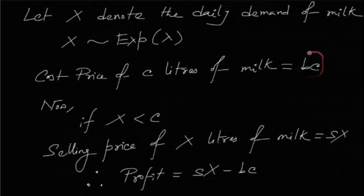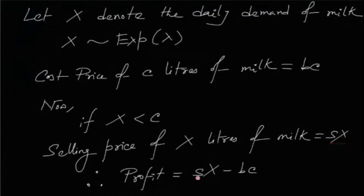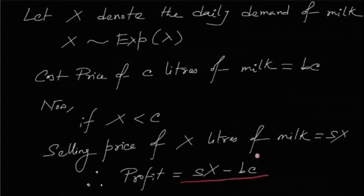Now, if X is less than C — that is, if the daily demand is less than the amount of milk available — then the selling price of X liters of milk is SX, since it's sold at S per liter. So the profit is SX minus BC, because only X liters of milk is being sold at price S per liter.